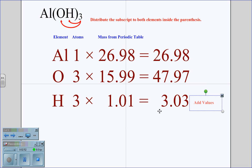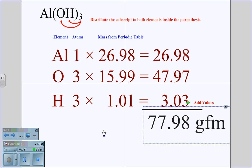We will then again add these values together to get a grand total of the gram formula mass for aluminum hydroxide of 77.98.